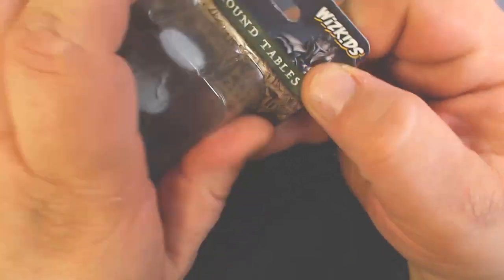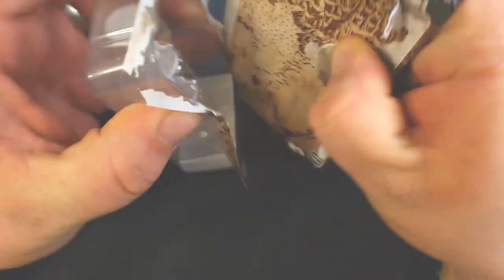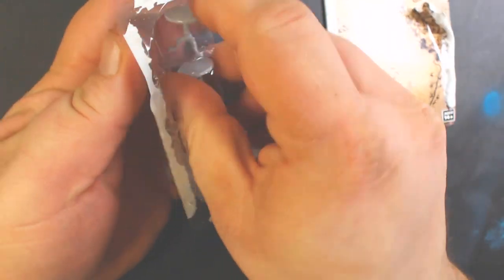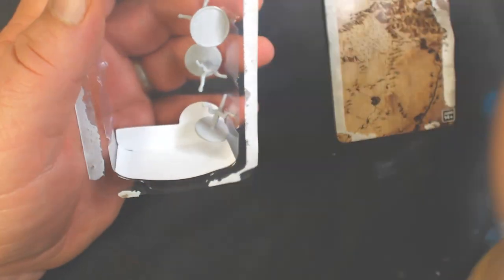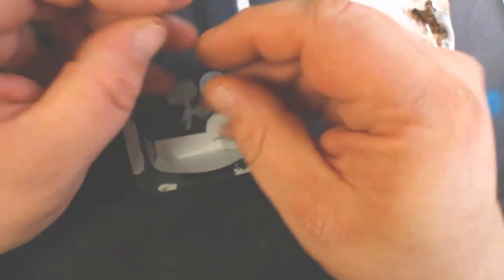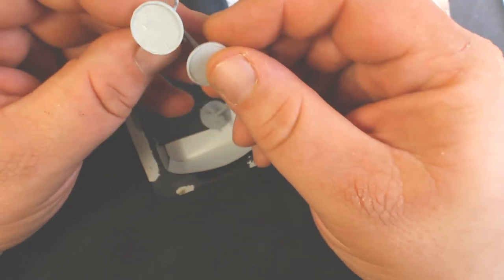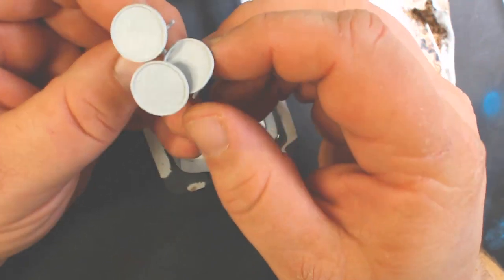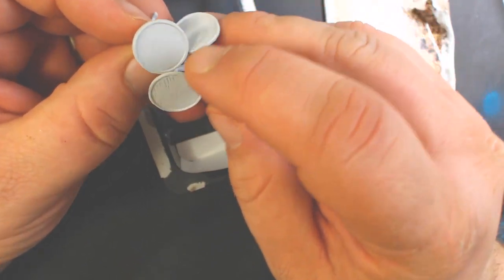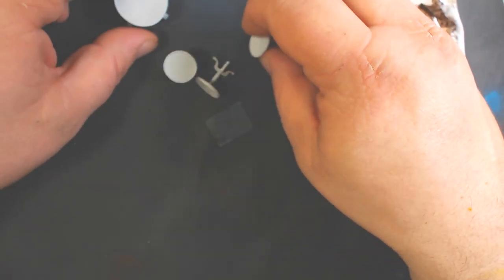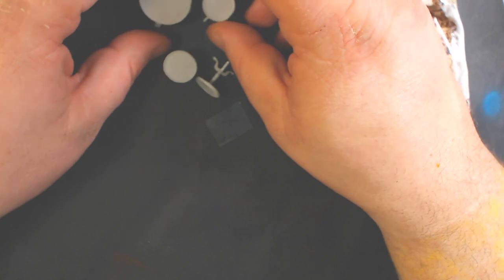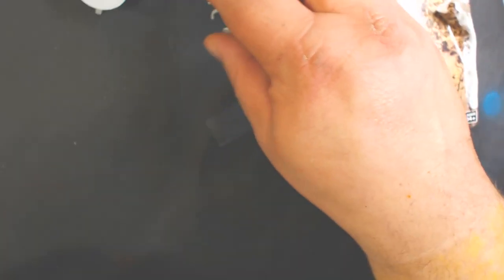So this pack comes with three small round tables. Nicely detailed, they've got a little rim around the edge. And just to show you, this is the larger round table that comes with the Rusty Dragon Inn set, so they're about half the size. Those are cool.